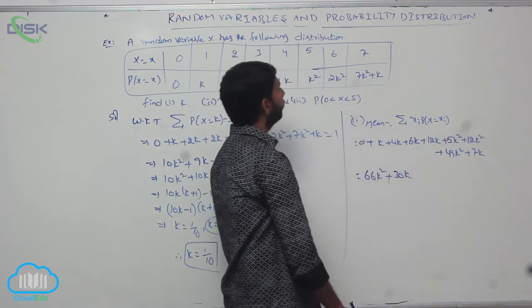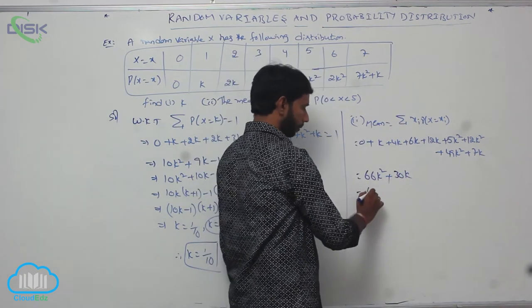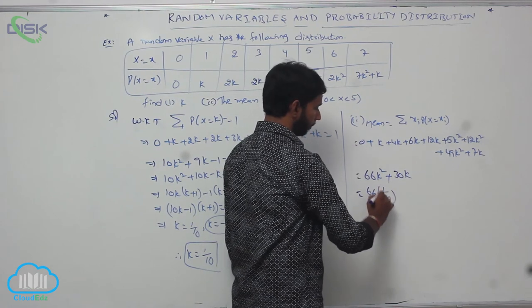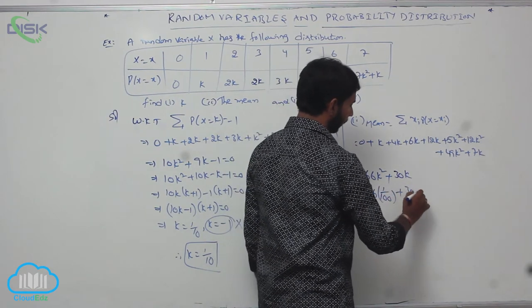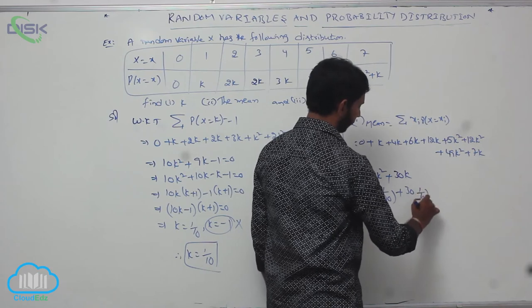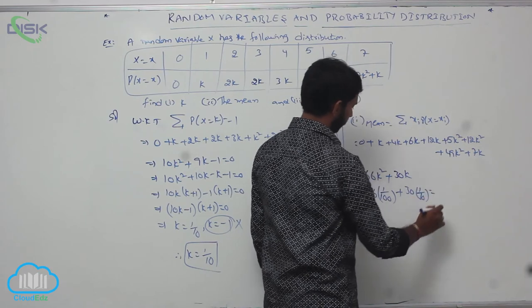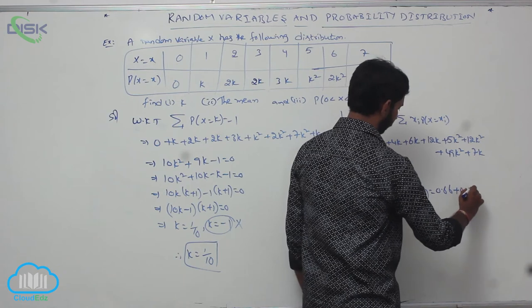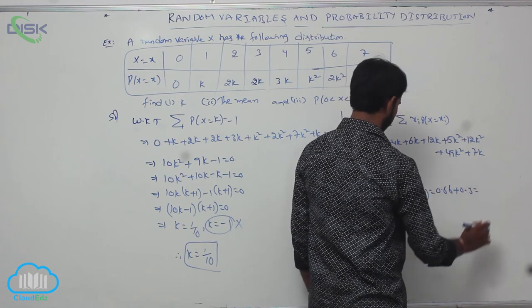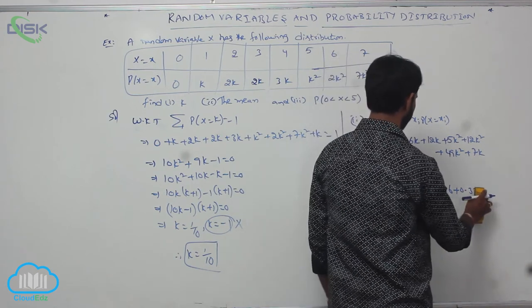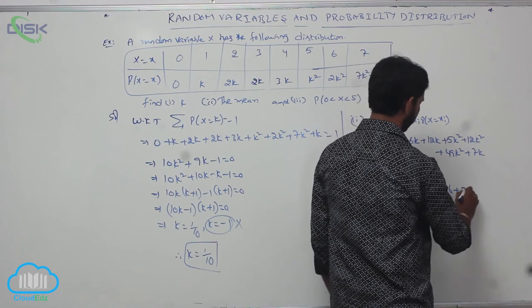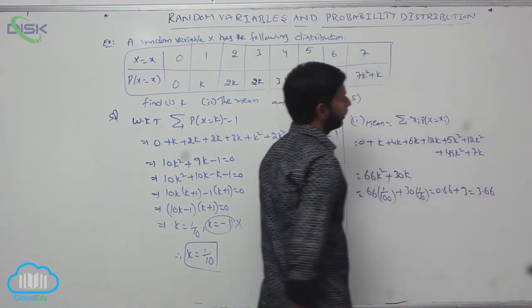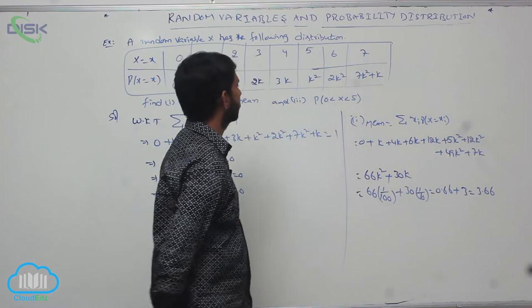Substituting k = 1/10: mean = 66 × (1/100) plus 30 × (1/10) = 0.66 plus 3.0 = 3.66. Therefore, the mean is equal to 3.66.